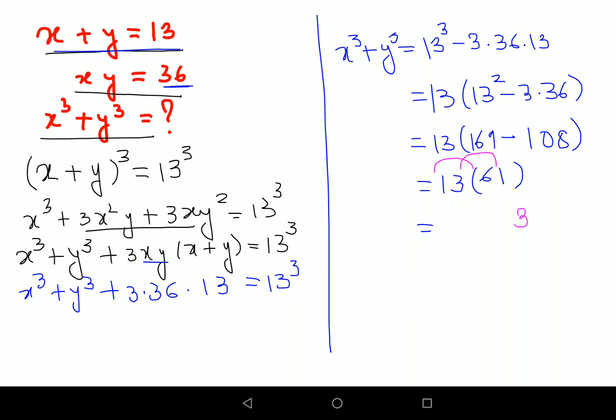I will do it with the rainbow method. So this is 1 into 6 which gets you 6. Then what you do is you multiply 3 and 6 and 1 and 1. So 3 and 6 gets you 18 plus 1 into 1 gets you 1. So 18 plus 1 gets you 19.